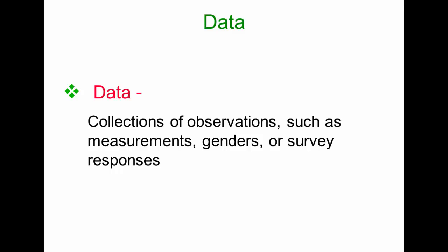Data is the collection of observations, such as measurements, genders, survey responses, favorite colors, or the number of credit hours students might be enrolled in. All of these things are data, and we get that data so that we can learn more about various groups.